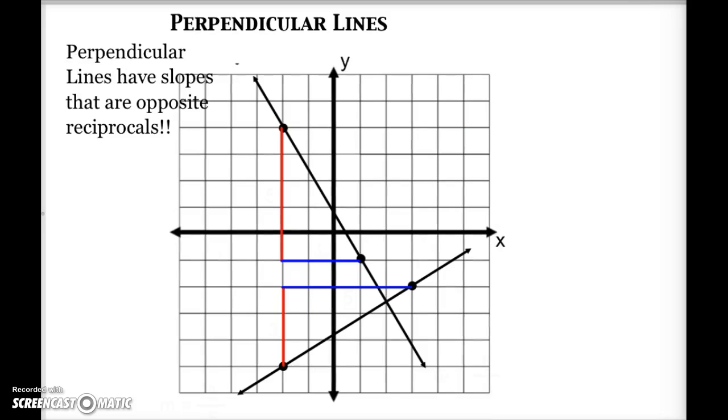Now let's look at perpendicular lines. Perpendicular lines have slopes that are the opposite reciprocals of each other.